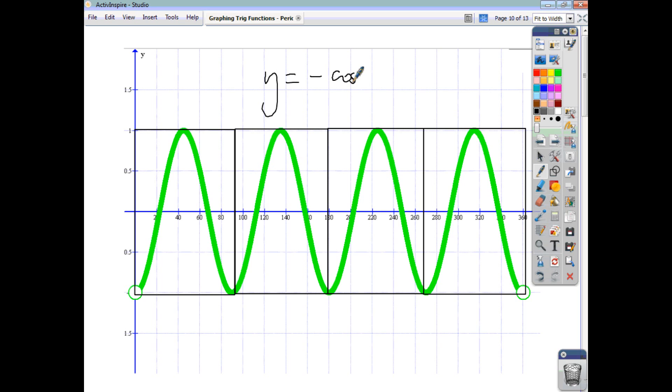So, we'll say that it's y equals negative cos. But how many do we have? We have 1, 2, 3, 4. So, it's negative cos of 4x. And that's you. Done.